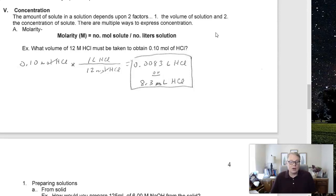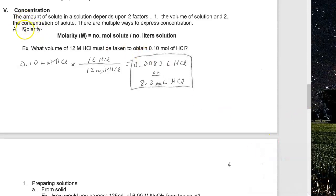There are lots of different concentration units out there. We're going to talk about a few of them, but really there's one main one that rises above the rest in chemistry, and that's something called molarity. Molarity is given by the symbol capital M — that's why we use lowercase 'mol' for moles, because capital M is for molarity. It's equal to the number of moles of solute over the number of liters of solution. So when you see something like 12 molar, that means 12 moles of HCl for every one liter of solution.